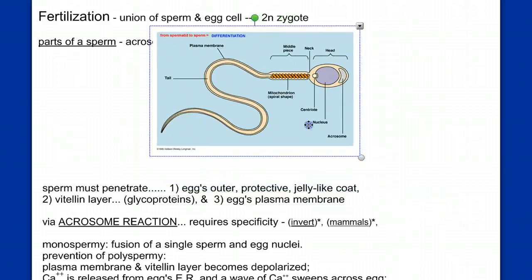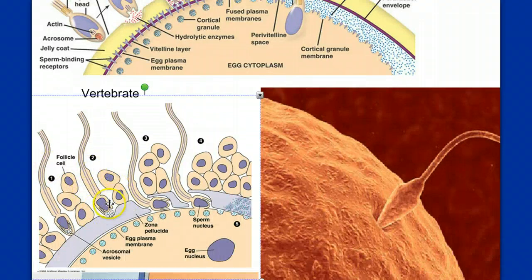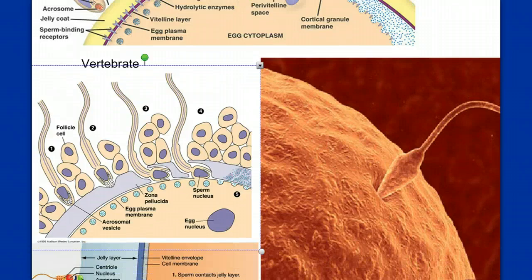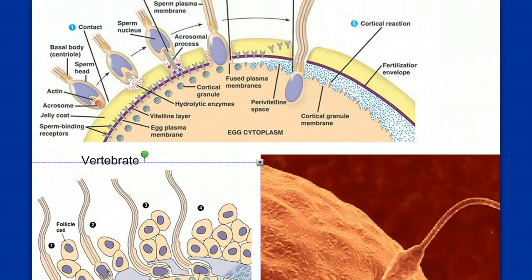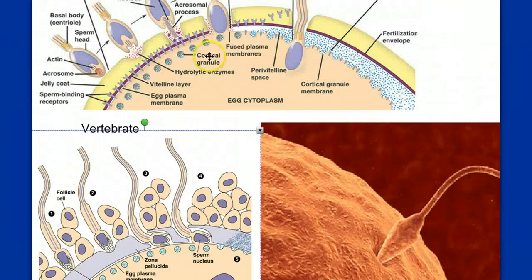When the sperm gets to the egg, it must pass through an outer jelly membrane and a glycoprotein vitelline layer before reaching the cell membrane. The sperm releases digestive enzymes that burrow through the jelly layer. When it contacts the cellular membrane, it causes a depolarization, and the egg's endoplasmic reticulum releases a wave of calcium ions, resulting in the cortical reaction — cortical granules are released and push the vitelline layer outward, creating a fertilization envelope.